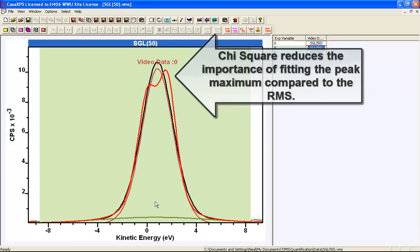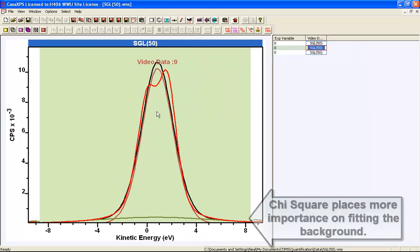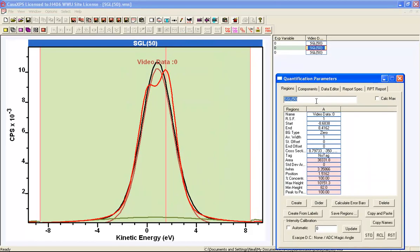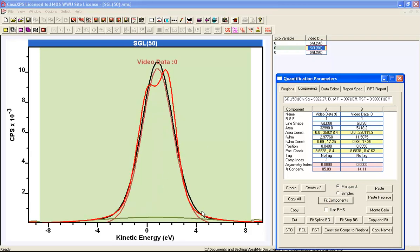Hence, you can see that chi-square gave a rather unrealistic fit using GL30 line shapes to a pair of peaks that really should have been just two equal-sized peaks. If we look at the result for the root mean square, you can see that it has indeed favored the peak maximum as you'd expect. If you do a chi-square, you can see that it's favored the background equally with the peak maximum and hence you get a completely different answer.